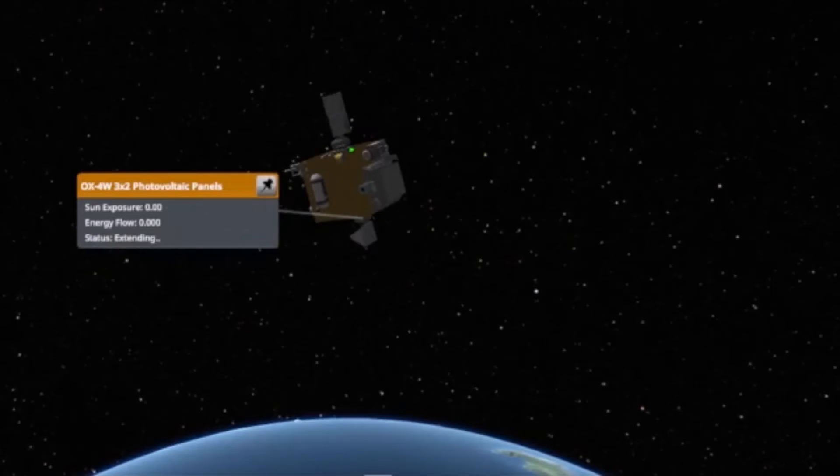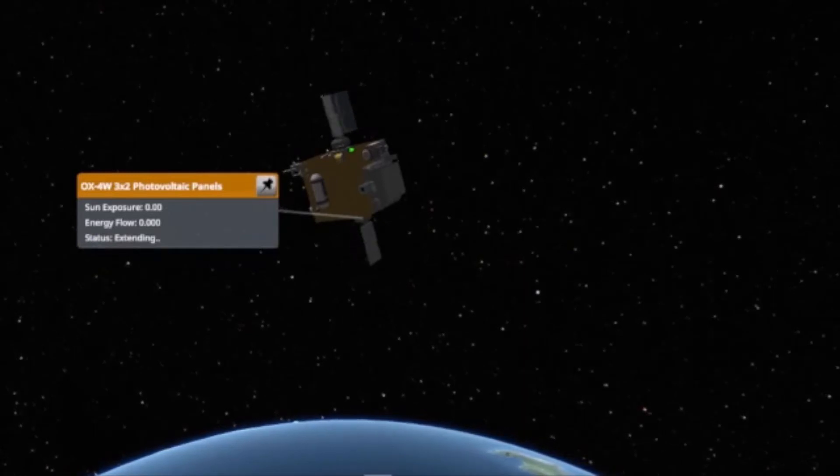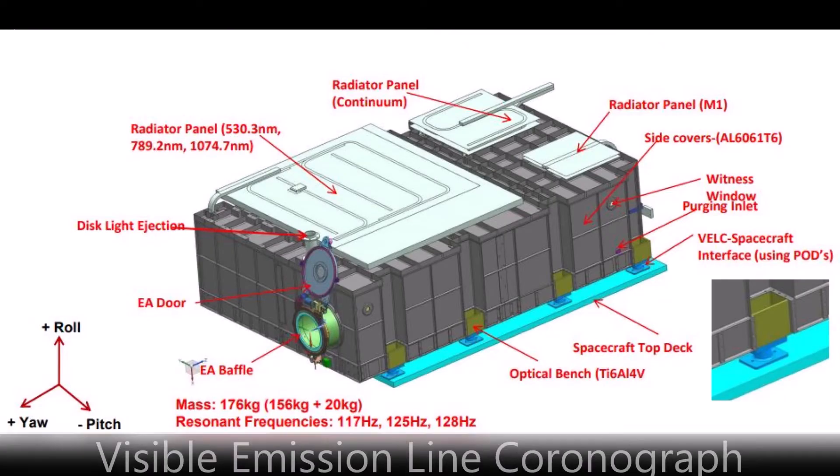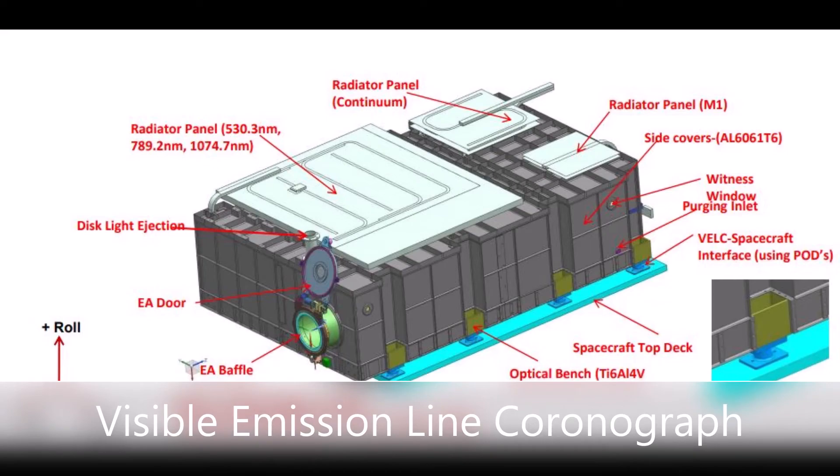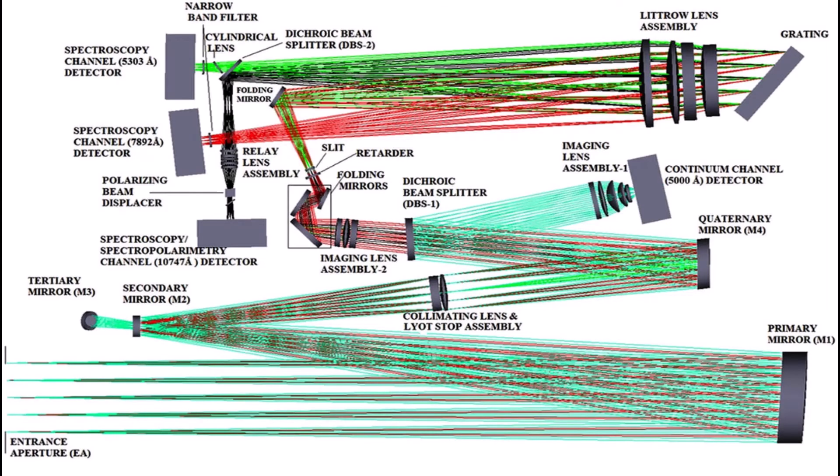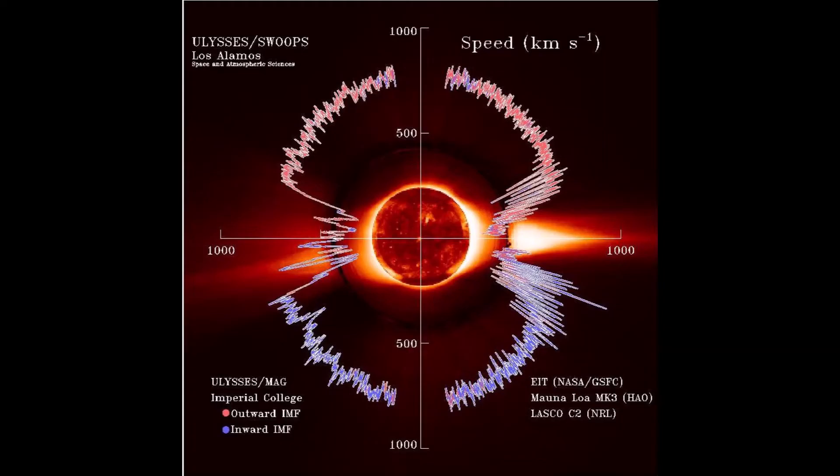The science payload of the Aditya L1 spacecraft includes visible emission line coronagraph to study the diagnostic parameters of sun corona and dynamics origin of coronal mass ejection.